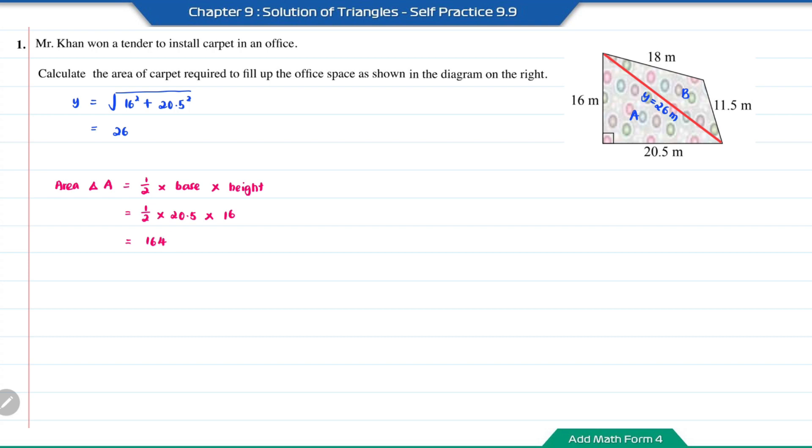As for triangle B, since the length of three sides are known, we can solve this using Heron's formula. First, we find the semi-perimeter of triangle B, which equals 26 plus 18 plus 11.5, divided by 2. The semi-perimeter equals 27.75.